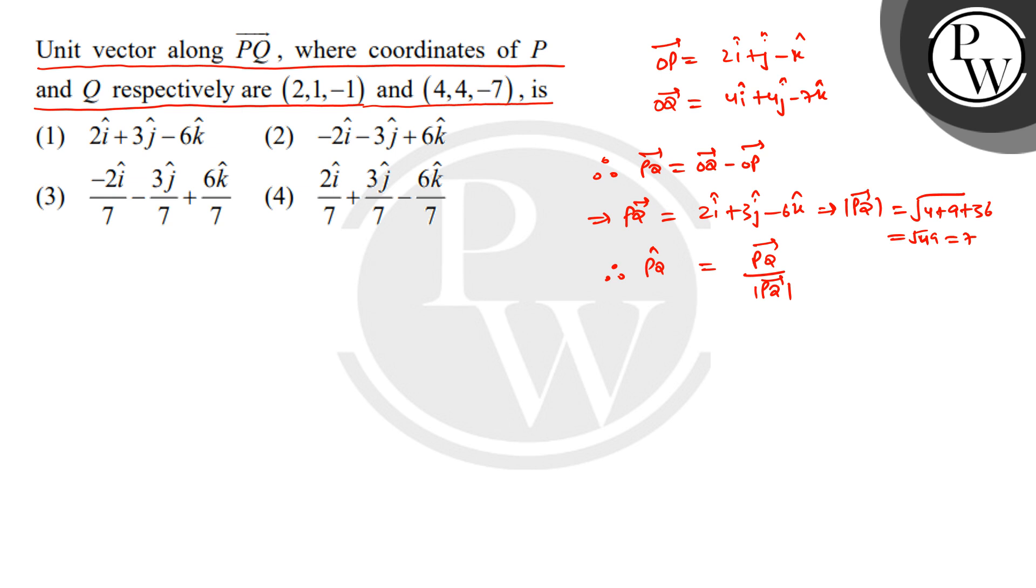So the unit vector equals (1/7) times PQ vector, which is (1/7)(2i + 3j - 6k). That gives us (2/7)i + (3/7)j - (6/7)k. So that is our final answer. Option fourth is the correct option. I hope you understood it well, best of luck.